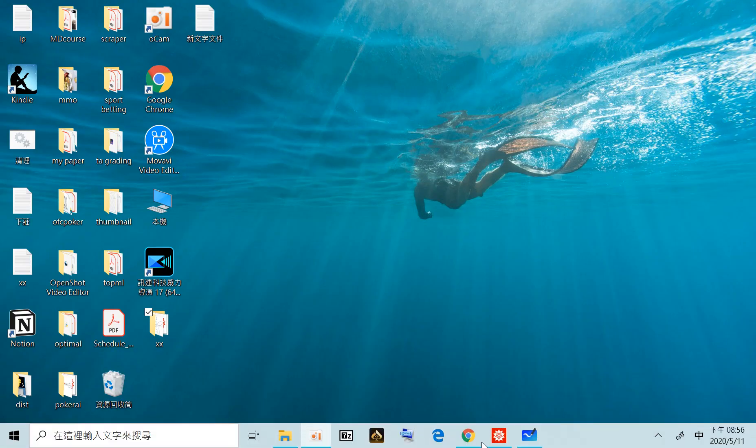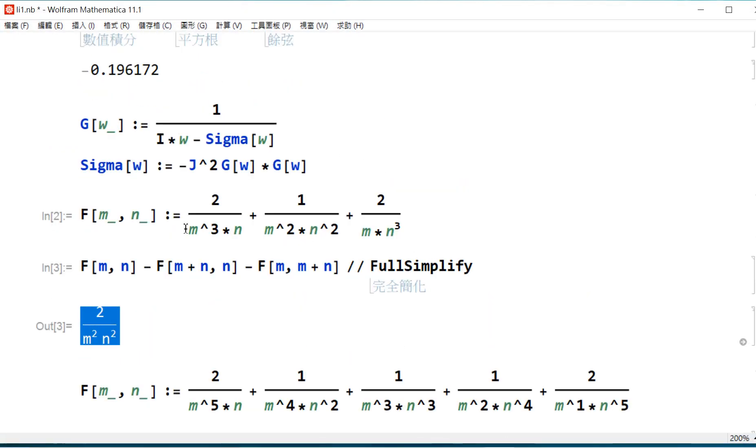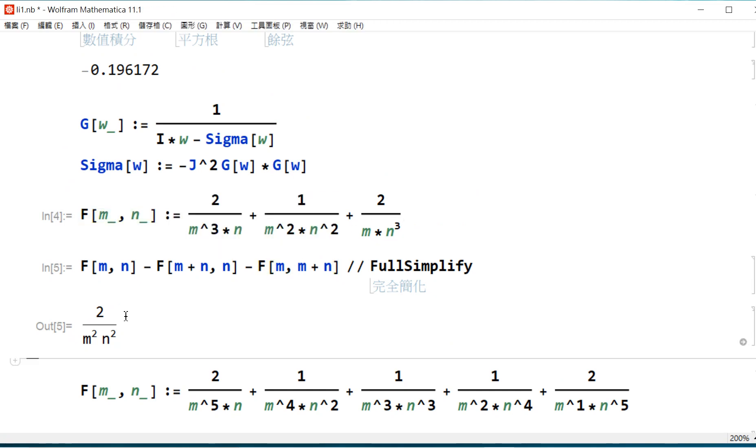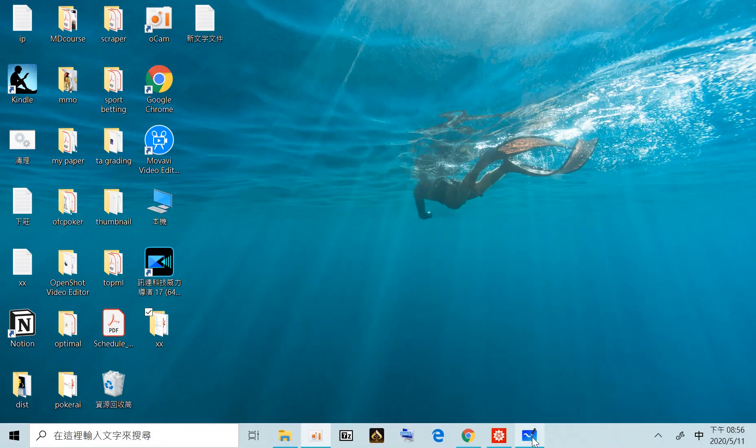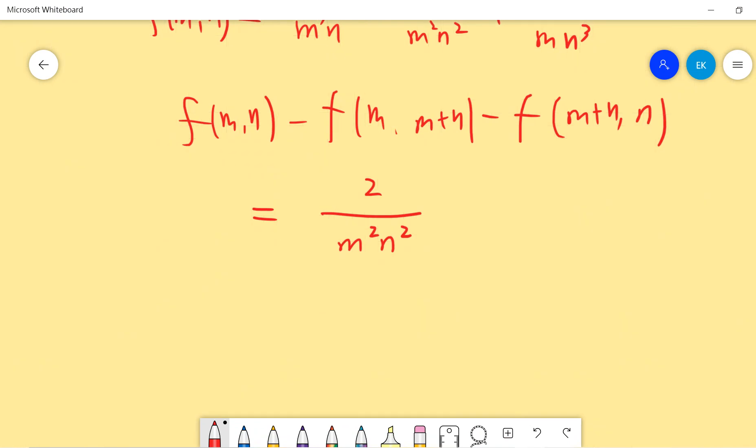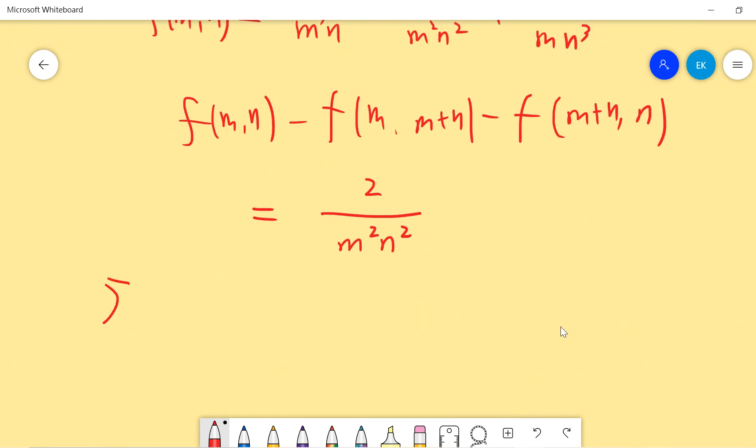Basically, I use Mathematica to compute this. You can see that f equals to this one, and then you do a full simplification and it tells you this result. So it's 2 over m squared n squared. This is just a direct computation. Once you know this direct computation, then we are already done because I can sum over m from 1 to infinity and n from 1 to infinity on both sides.